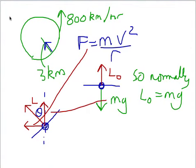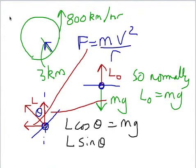So what do we know? To stop the airplane going up or down we must have L cos theta equals mg. And to allow it to go in a circle we must have that L sin theta equals mv squared over r.